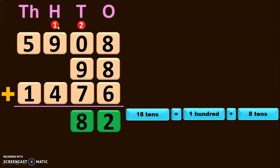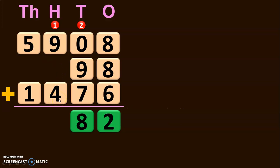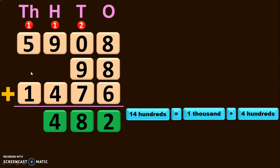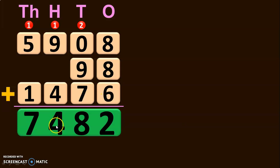Next, the addition should be done in the hundreds place. 1 plus 9 will give you 10. Here, there are no digits from the second number, so assume it to be 0. 10 plus 0 will give you 10, and 10 plus 4 will give you 14 hundreds. So you will have to regroup the digits in the hundreds place. 14 hundreds is 1,400, which is nothing but 1,000 plus 4 hundreds. Retain the 4 hundreds and take the 1,000 as a carryover to the thousands place. 1 plus 5 will give you 6, and 6 plus 0 is 6, and 6 plus 1 will give you 7. So the sum of 5,908 plus 98 plus 1,476 is 7,482.